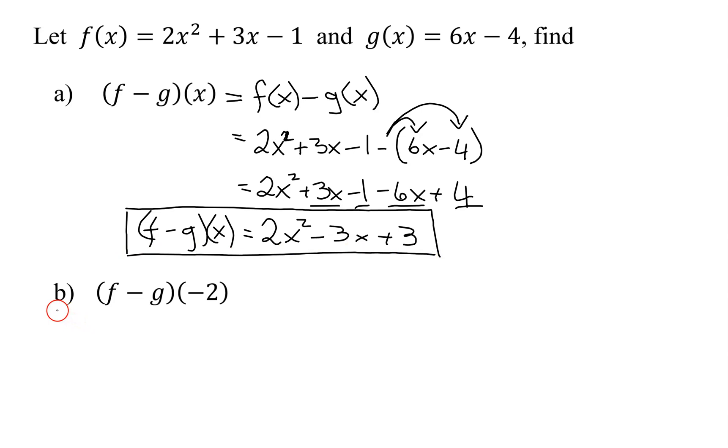So now in part b we have to find (f - g) at -2, or the difference function evaluated when x equals -2. Since we already have the definition that we found in part a for the difference function, all we have to do is plug x = -2 in here and here and I will have evaluated the difference function at -2.